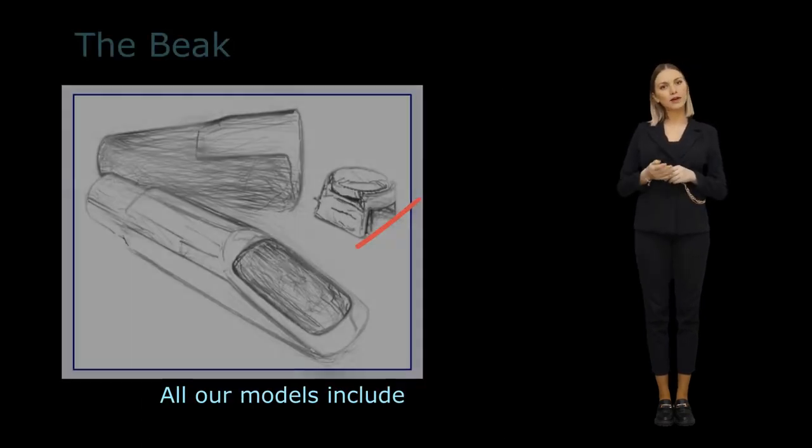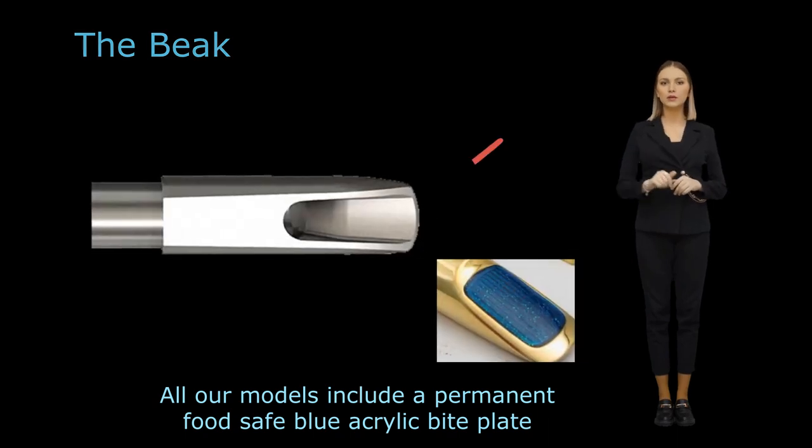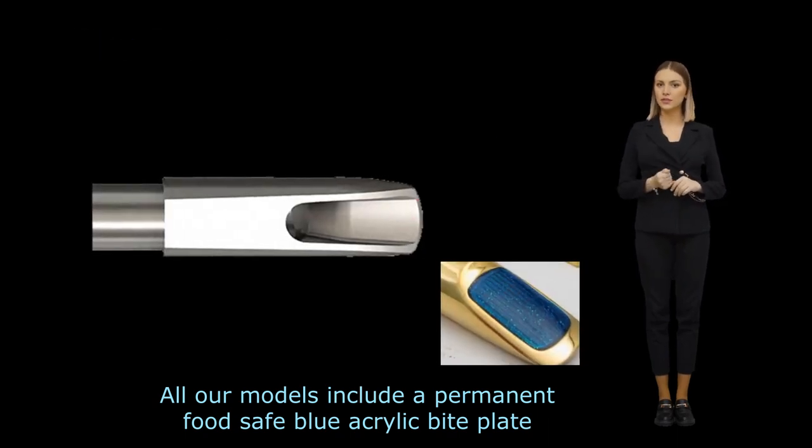The beak can be found in the front outer portion of the mouthpiece where the player's mouth fits while playing, and it extends from the tip to the body.